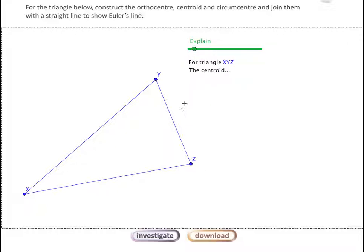The centroid is formed by finding the midpoint of each side and then connecting it to the vertex that's opposite that midpoint. We can see we've just done that from each of the midpoints across to the opposite vertex.